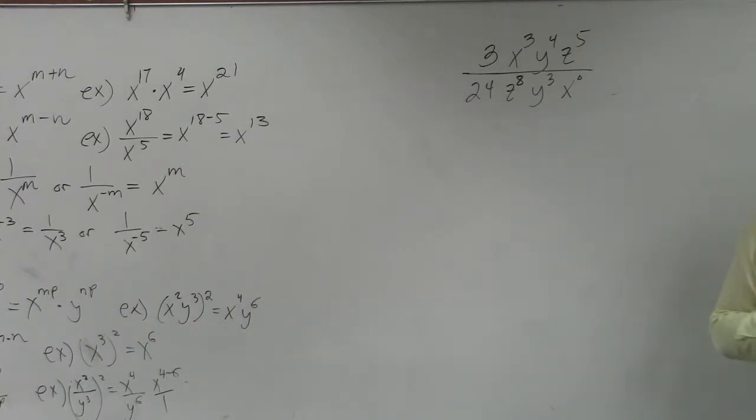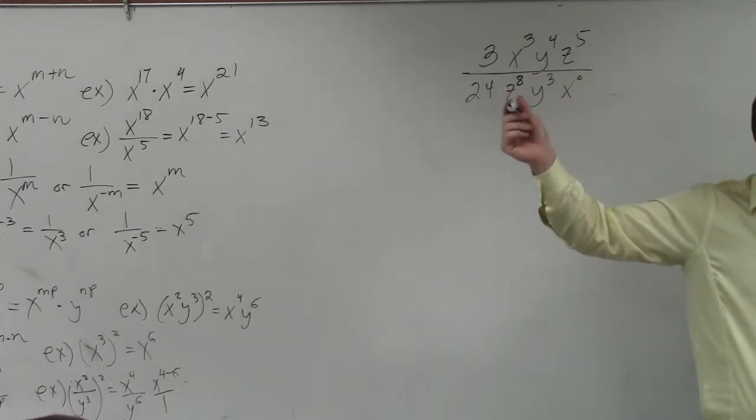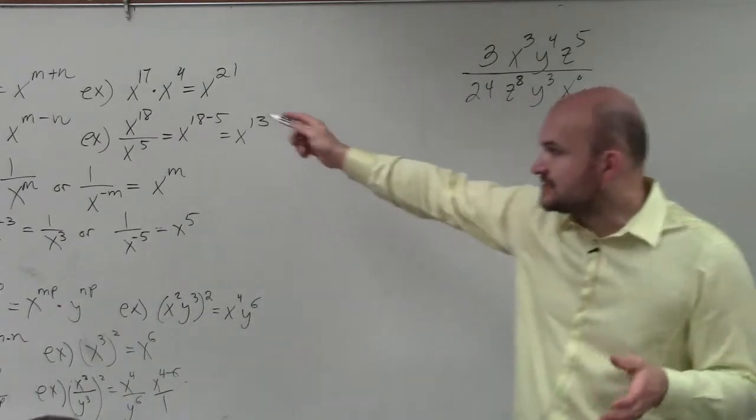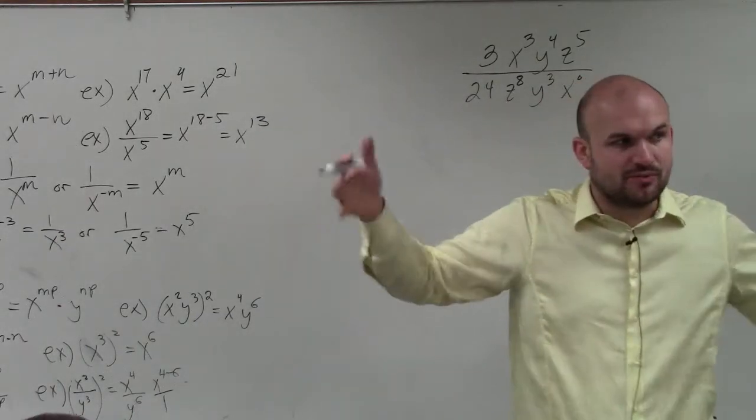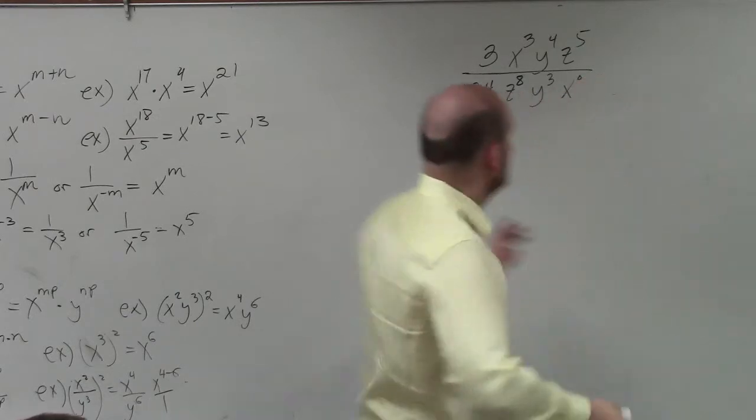So I'm actually going to be using a couple of rules here. The first thing that I want to make sure you guys are aware of is, you guys can see the like terms are not on top of each other, right? So we want to separate this. I can only apply my rules of exponents when I have the same base.